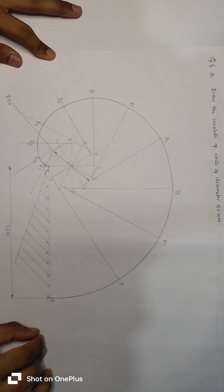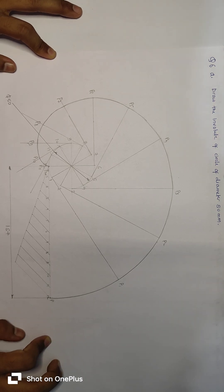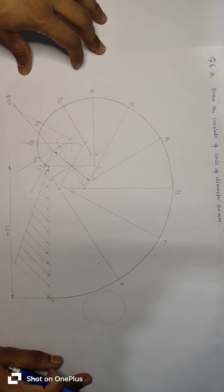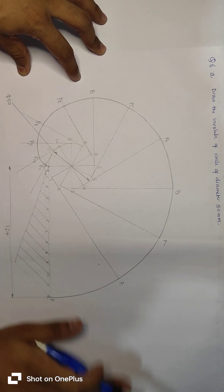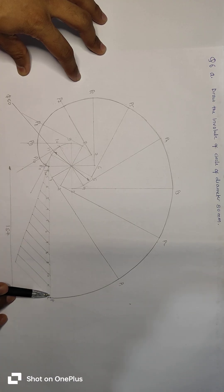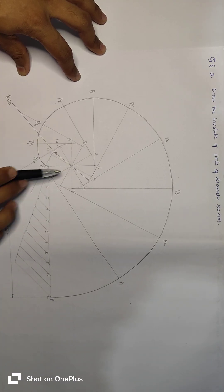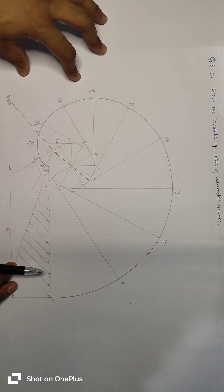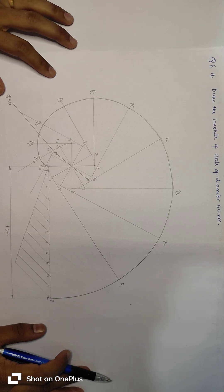The next question, question 6a: draw the involute of a circle of diameter 50 mm. In almost all previous four papers there was an involute question. This is very simple. One mark for the circle, one mark for the construction line, and we divide both the circle and the line into 12 equal parts. Total marks for the involute is seven.